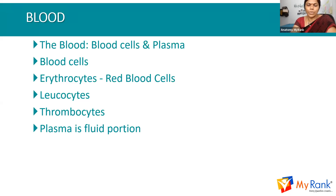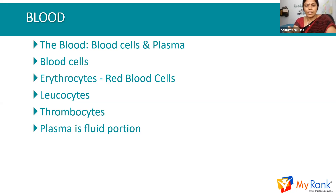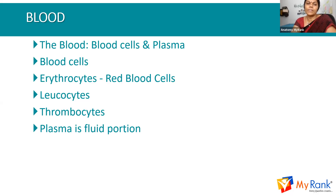Erythrocytes are the red blood cells. Leukocytes are again divided into granulocytes and agranulocytes. The granulocytes are mainly eosinophils, neutrophils, and basophils — these three are the granulocytes, and they have granules in their plasma. Eosinophils are related to histamine reactions, so if eosinophil levels increase in blood, mainly allergic reactions will occur. Neutrophils play a main role in wound healing.